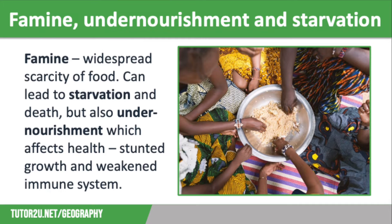People suffering from undernourishment may have stunted growth, both physically and cognitively, and will have a much weakened immune system, making them more vulnerable to illness and disease. This in turn can lead to more food insecurity, as there are fewer strong and healthy people to work the land, so food production decreases.